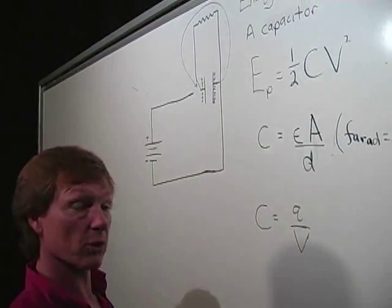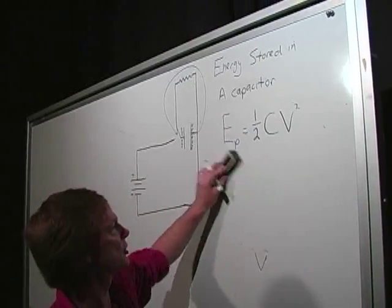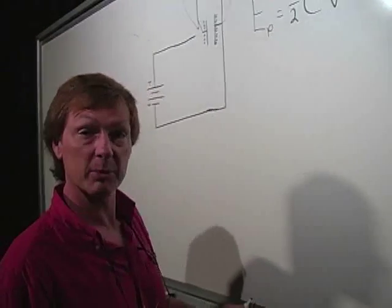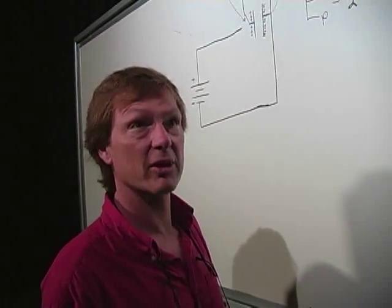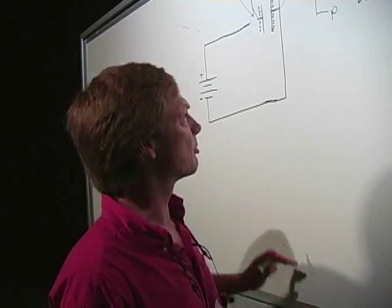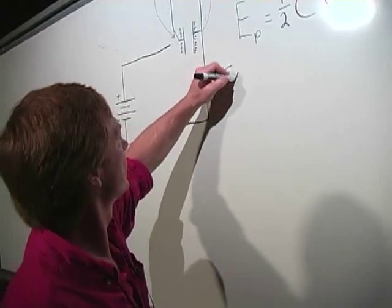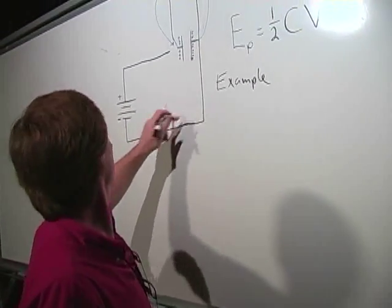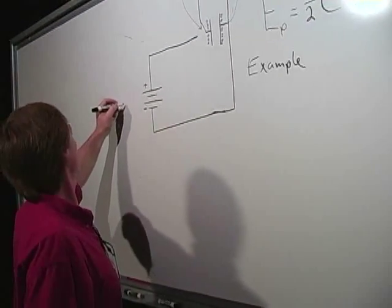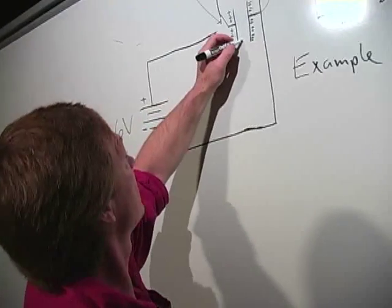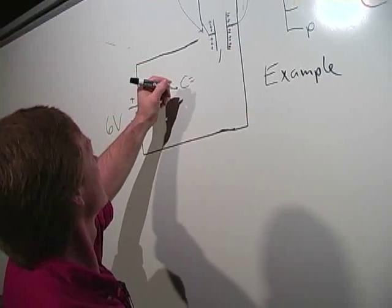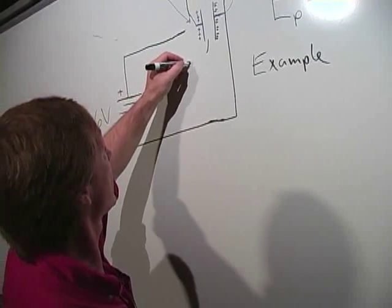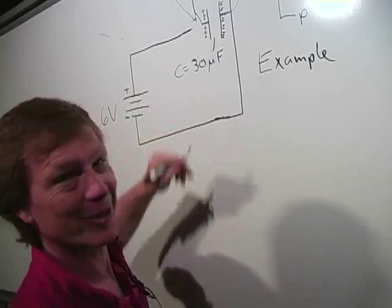Capacitors are usually a 1-farad capacitor is a big honking capacitor, but they're often much smaller. They can be down to picofarads, which is 10 to the minus 12, a trillionth of a farad. Let's try something with microfarads. So let's do an example. Let's say I've got this circuit here and I've got a 6-volt battery here, and my capacitor is 30 micro-ohms, microfarads. Microfarads, sorry.